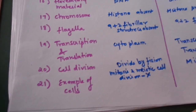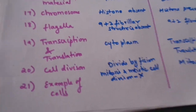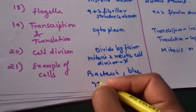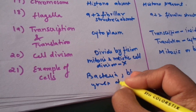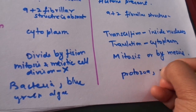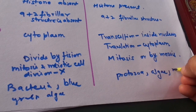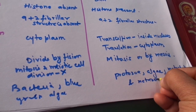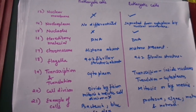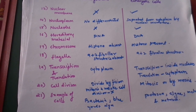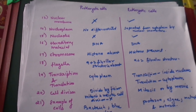The examples of prokaryotic cells — which are haploid — include bacteria and blue-green algae. Examples of eukaryotic cells include protozoa, algae, metaphyta, and metazoa. So these are the major 21 differences between the prokaryotic and eukaryotic cells. I hope you remember most of them; if not, just learn a few important differences and write them in the examination. Thank you for watching my video.